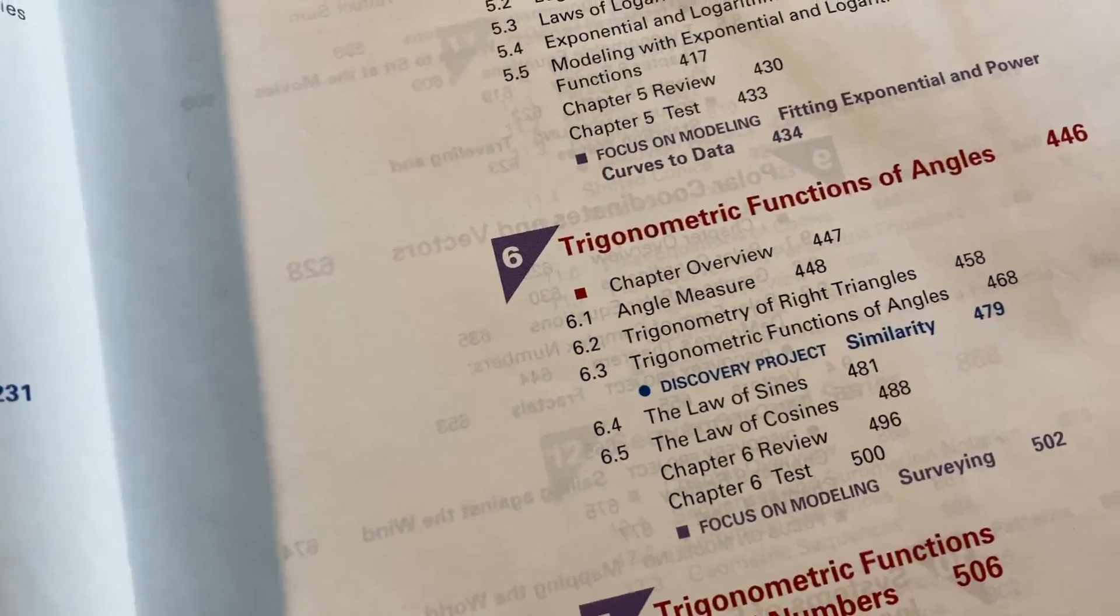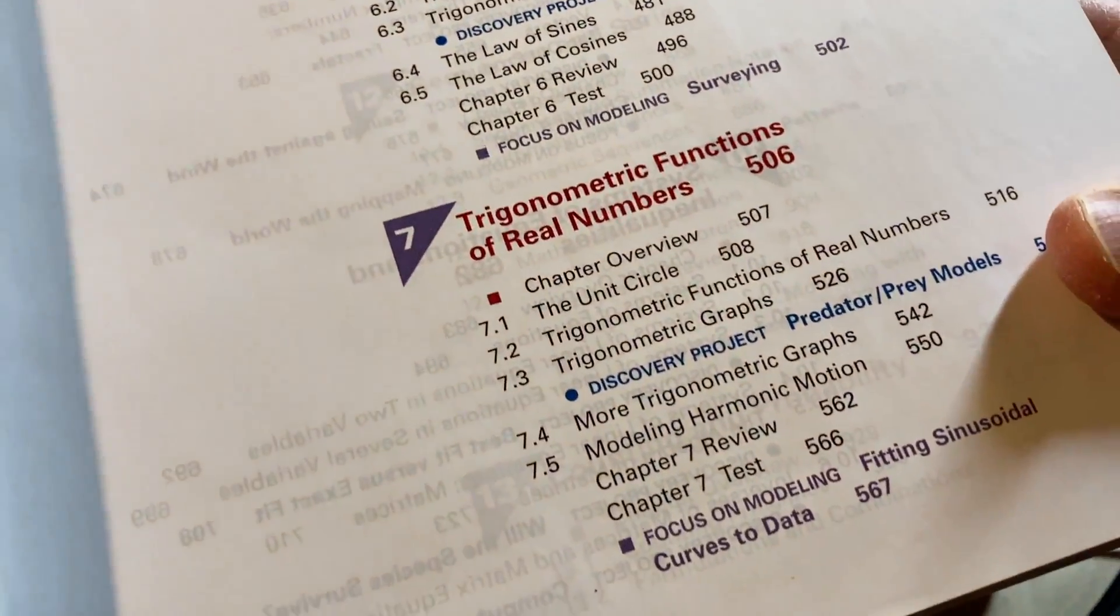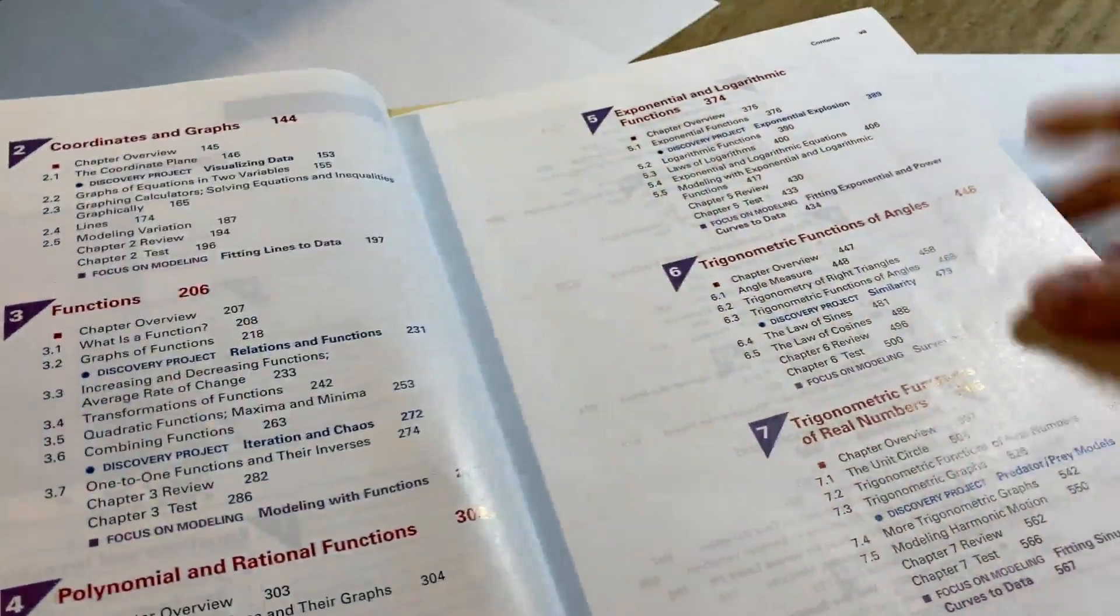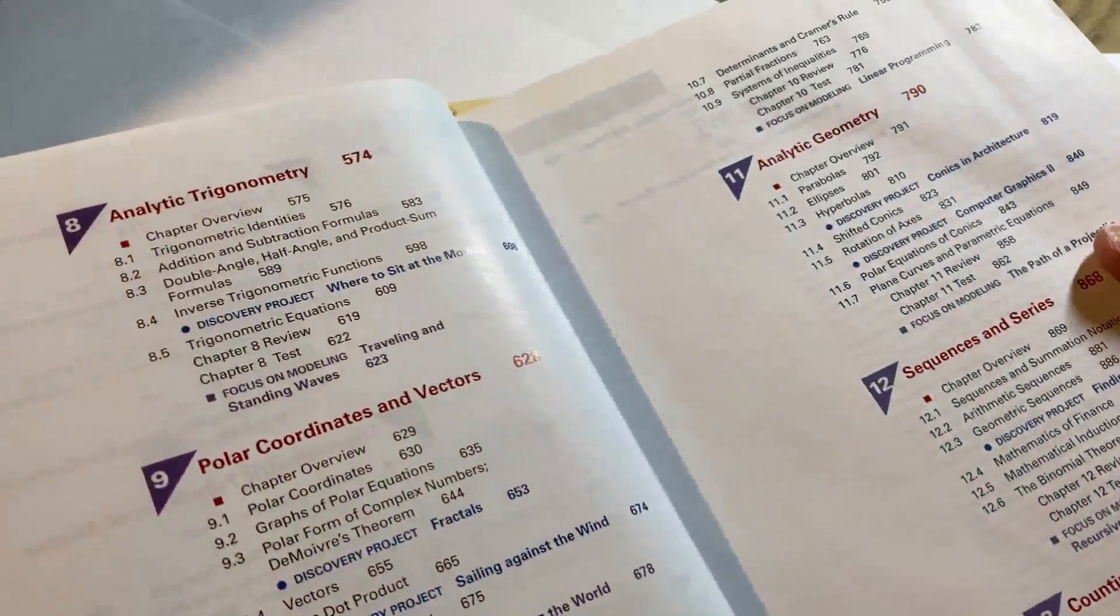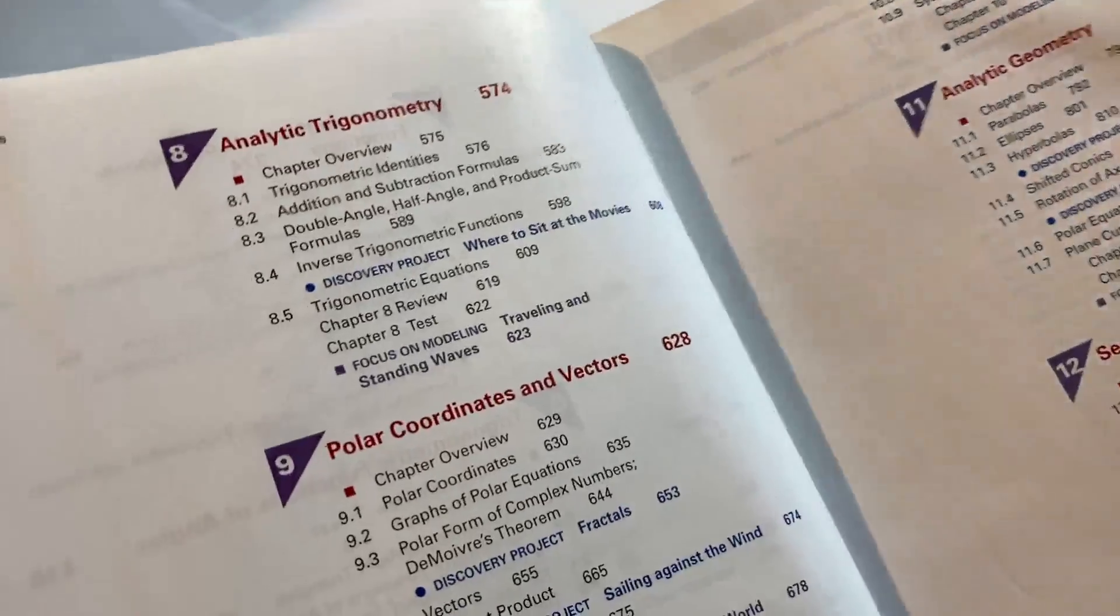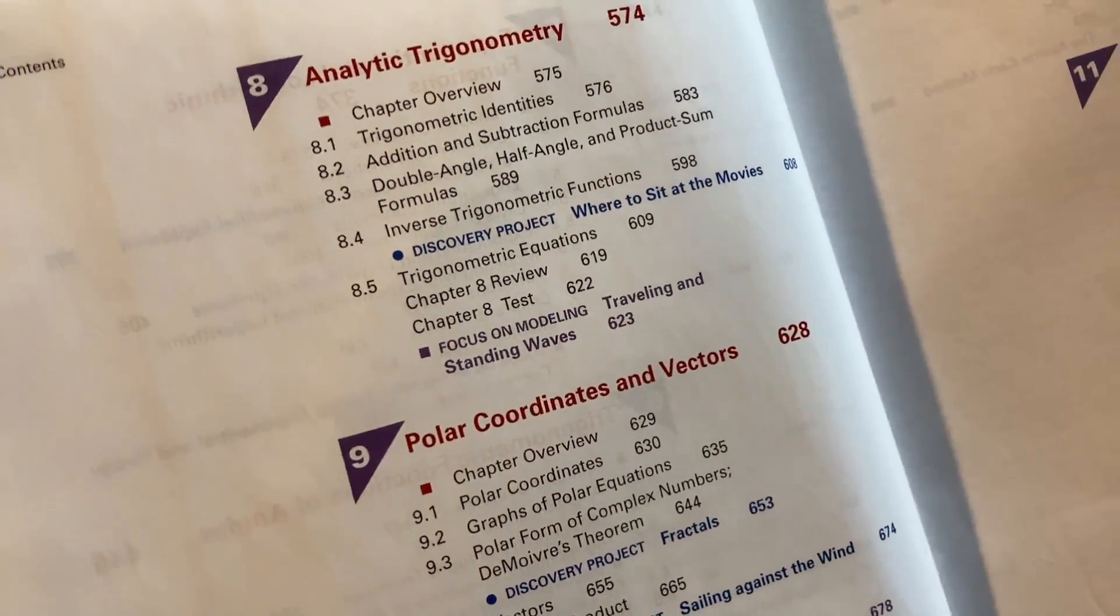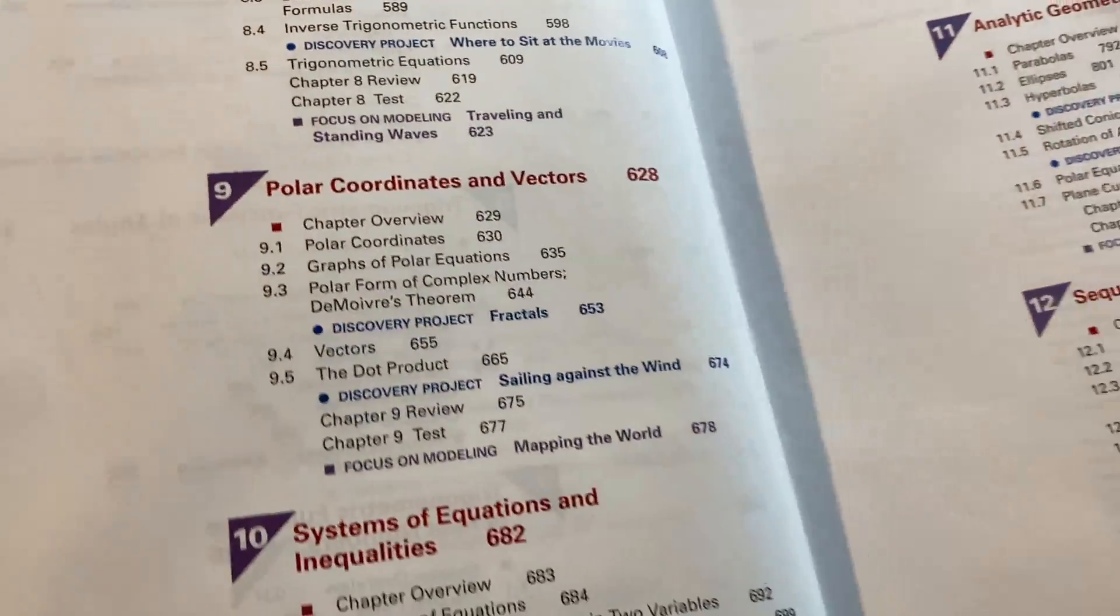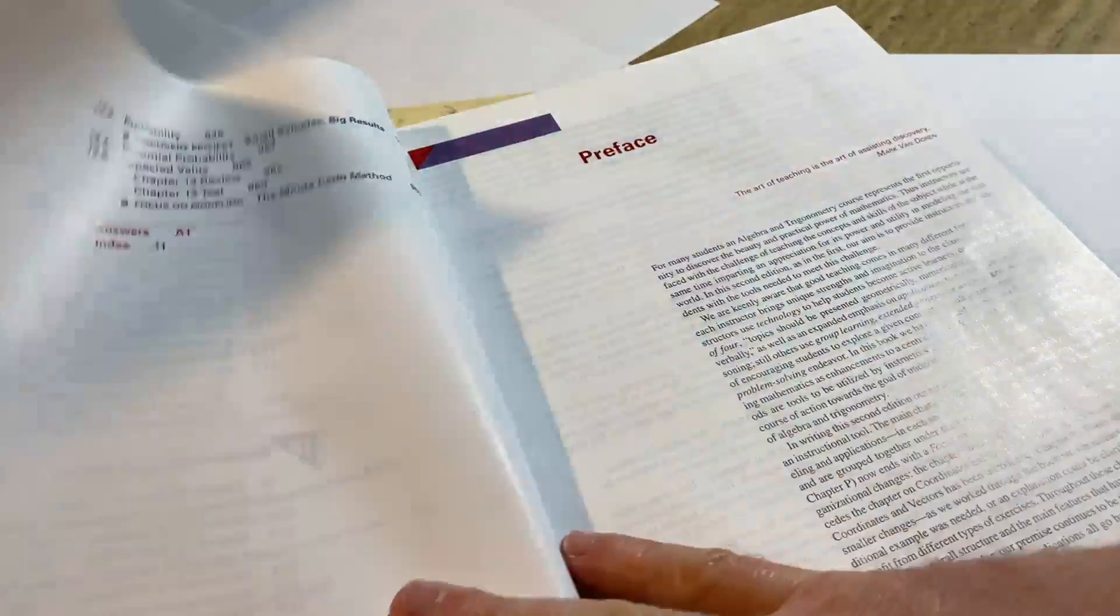Let's jump to the trig. So here's where the trig starts. Trig functions of angles, trig functions of real numbers. That's where it talks about the unit circle. Trig is tough because you really have to learn the first stuff you learn. Then analytic trigonometry, polar coordinates and vectors.